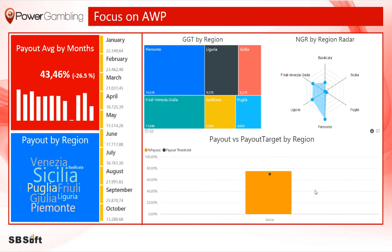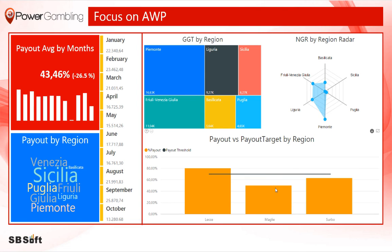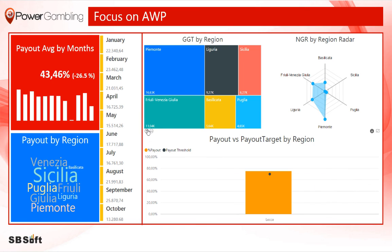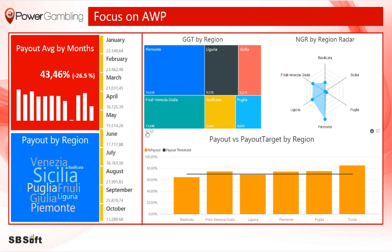Now you can see the region details by clicking on a bar and drilling down to province. With another click, you drill down to city level. Then you can drill up by clicking the up arrow key on the top.